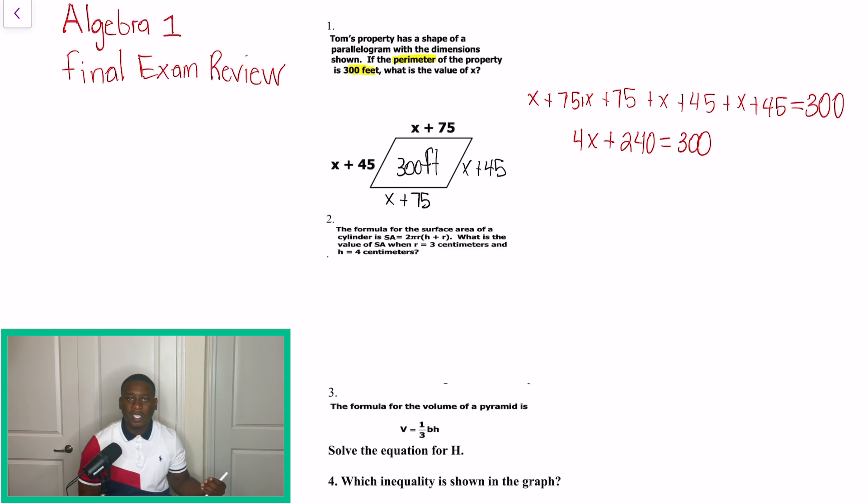Add all our X's together, add all our numbers with no variable together. Now we're going to solve for the X. So we'll subtract 240 from itself and on the opposite side of the equation from its like term. 4X comes down and now 4X is equal to 60. And for us to figure out exactly what X is now, we're going to divide both sides by 4 and we'll get X is equal to 15 feet.